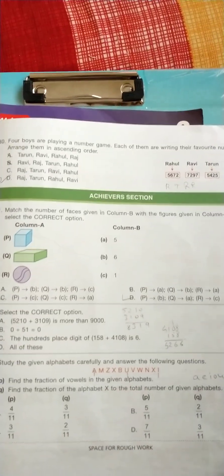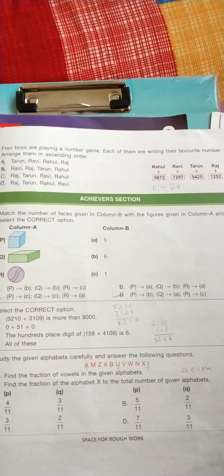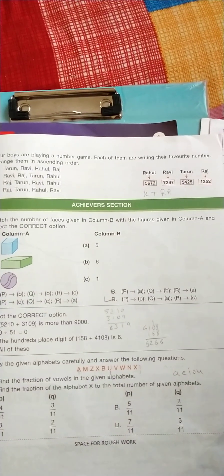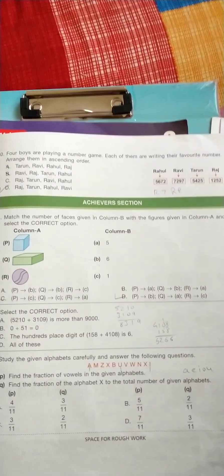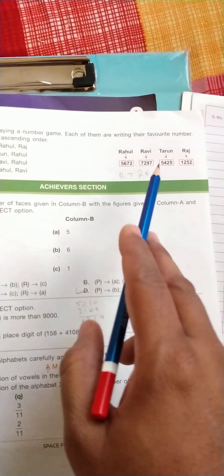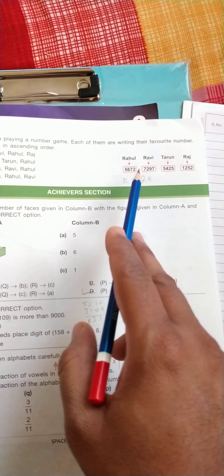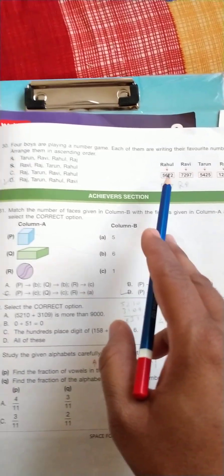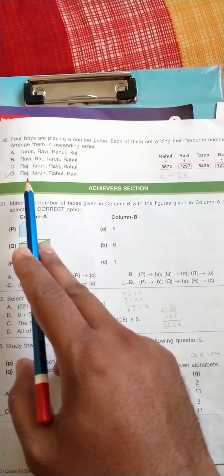Question number 30: 4 boys are playing a number game. Each of them are writing their favourite number. Arrange them in ascending order. So just these numbers are arranged in ascending order, so the correct option is D.